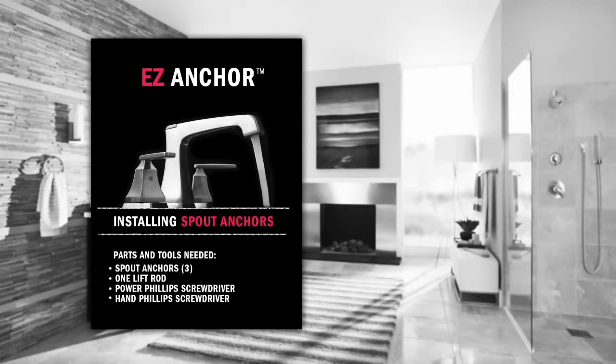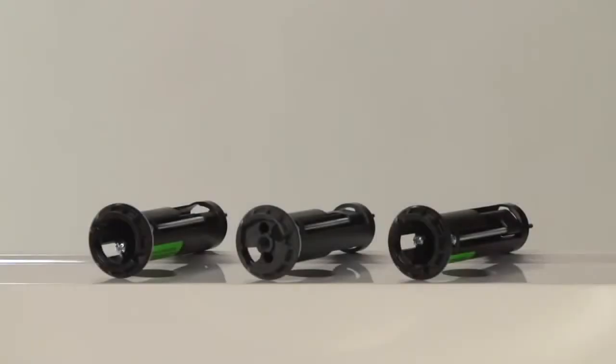Now that you have everything, you need to know which anchor goes where. The spout anchor is dark gray and goes in the center hole, and the hot and cold anchors are black and can go on either side.